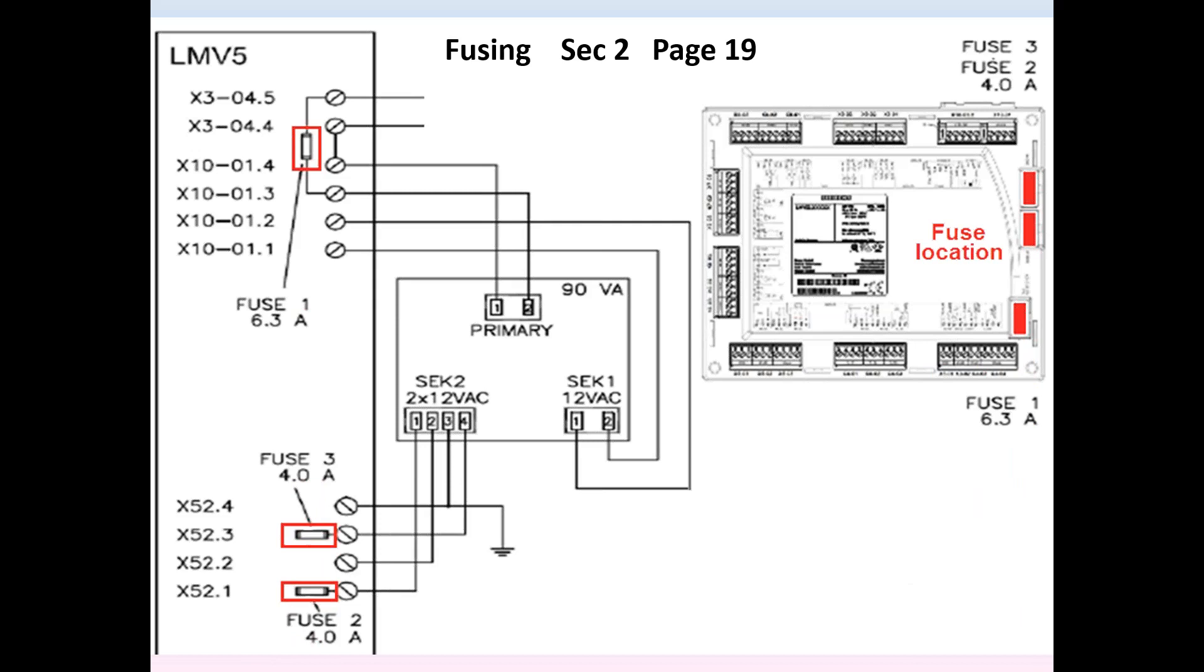And finally, I'd like to point out a common wiring error from the transformer SEK2 to LMV-5's X52. Note the crossover. Specifically, one goes to one, two goes to two, three goes to four, and four goes to three.